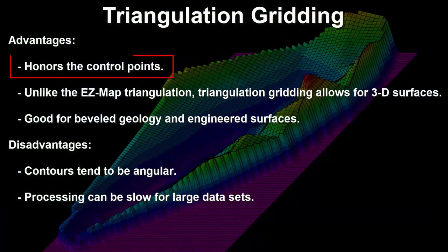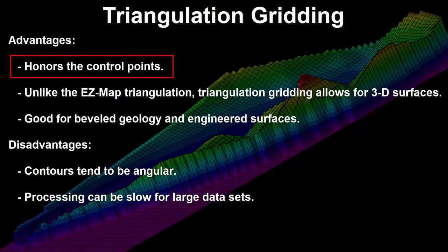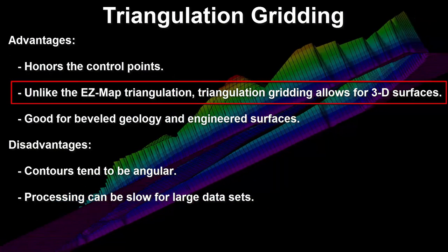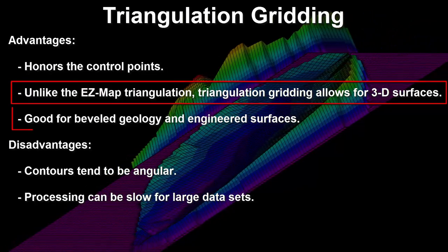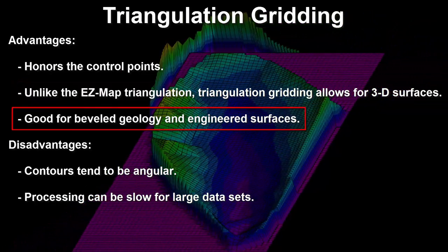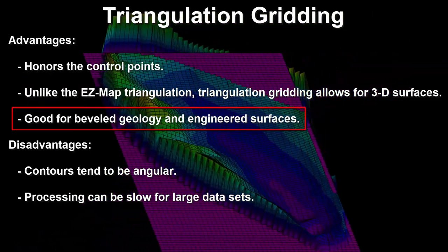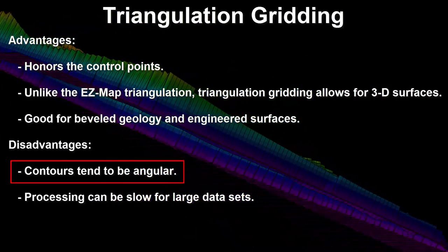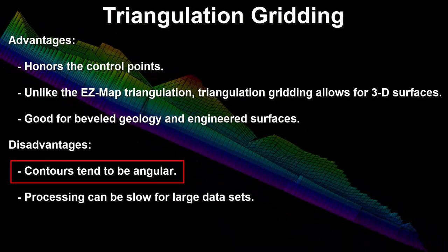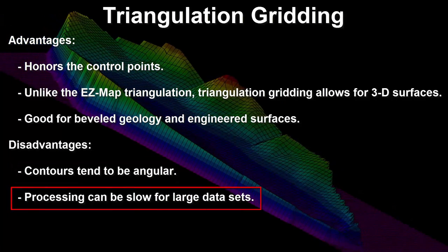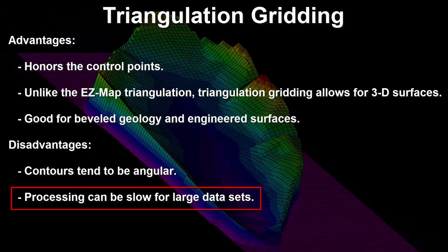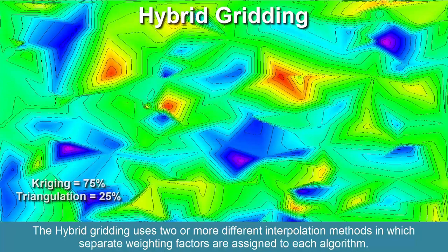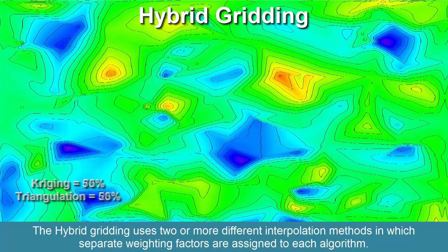Advantages: triangulation gridding honors the control points, allows for 3D surfaces, and is good for beveled geology and engineered surfaces. Disadvantages: triangulation contours tend to be very angular, and triangulation gridding processing can be slow for large data sets.